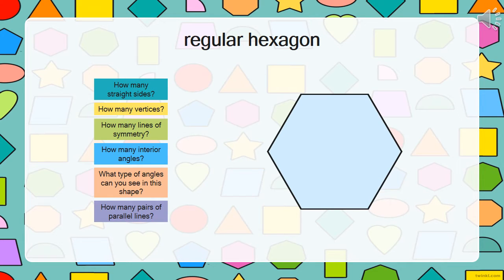Here's a regular hexagon. It has six straight sides, six vertices, six lines of symmetry, six interior angles, six obtuse angles, and three pairs of parallel lines.